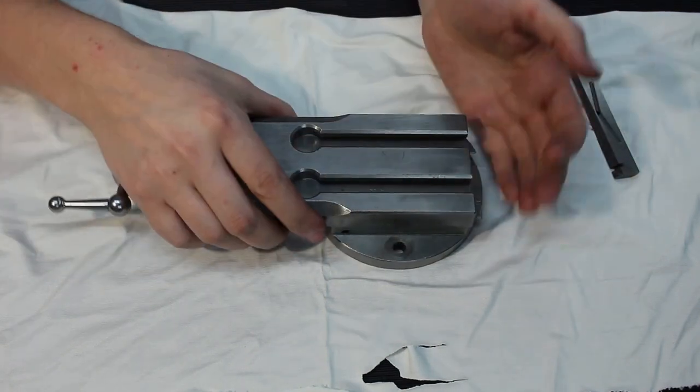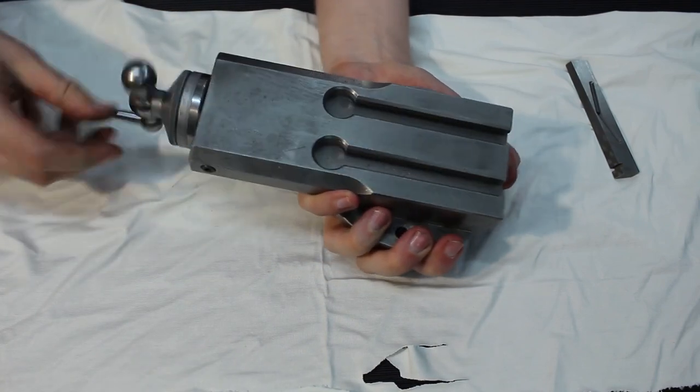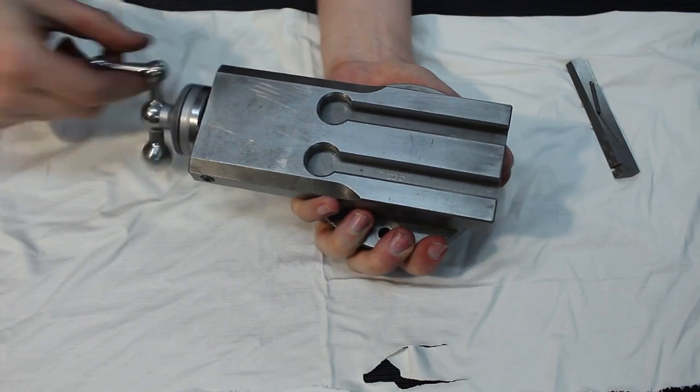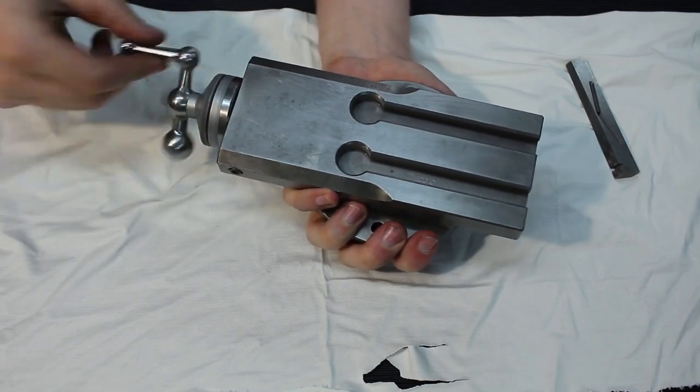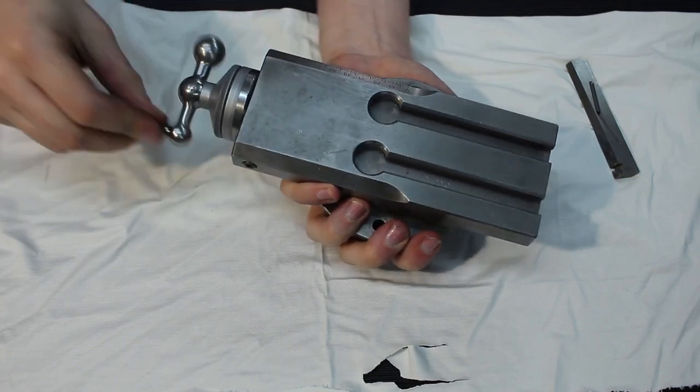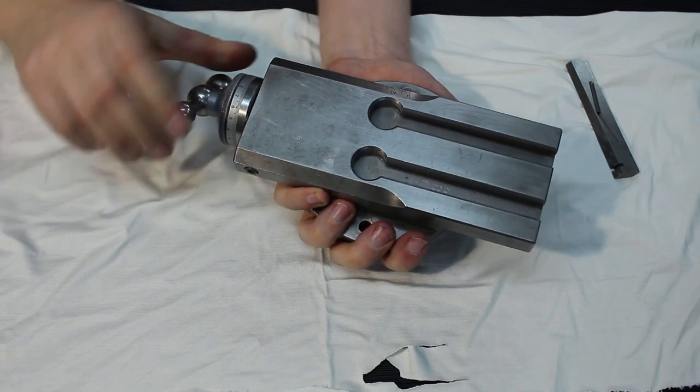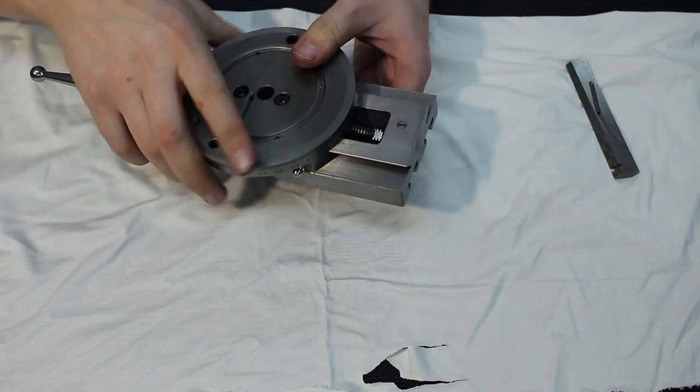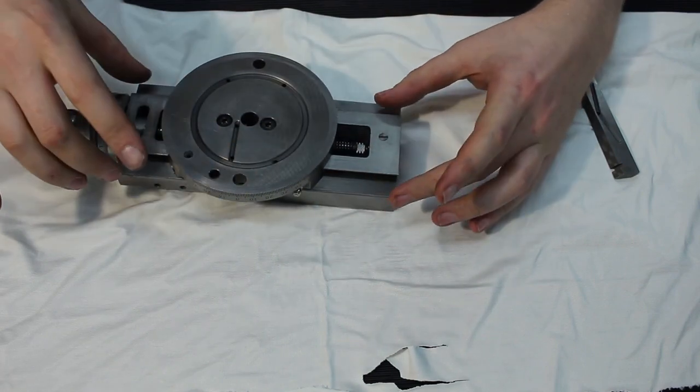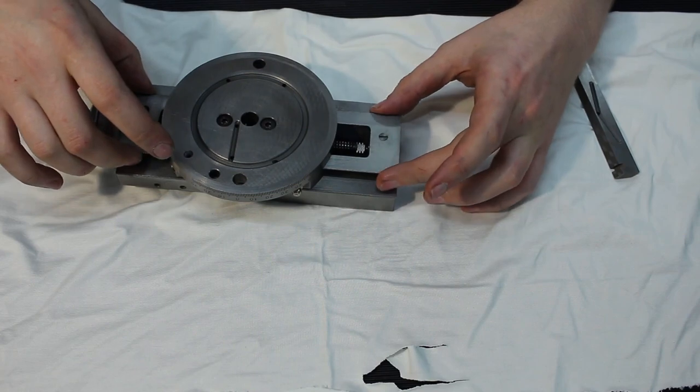The problem with most slides is that they wear uneven. In this case, as you can see, I can crank it nicely along. It's almost a bit too loose, but when I get to the other end of the travel here, it binds up. That means that the dovetail down here on this end is worn. It's narrower than over here.